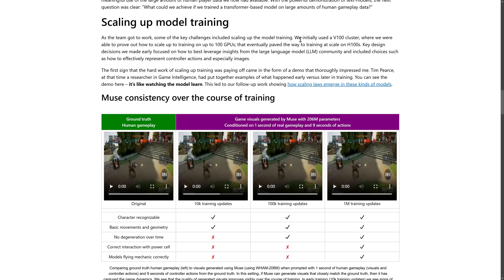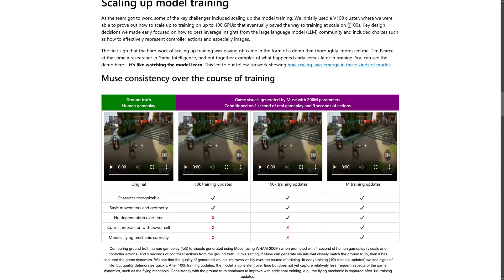If you're wondering what kind of tech was behind it, they initially trained on a V100 cluster — we don't know exactly how many V100s, but these are several thousand dollars a piece — training on up to 100 GPUs, so roughly $100,000 to $200,000 worth of chips. Eventually they moved up to H100s, which are about $30,000 a piece. So this isn't something you're going to be doing in your bedroom at home, at least not with current tech.